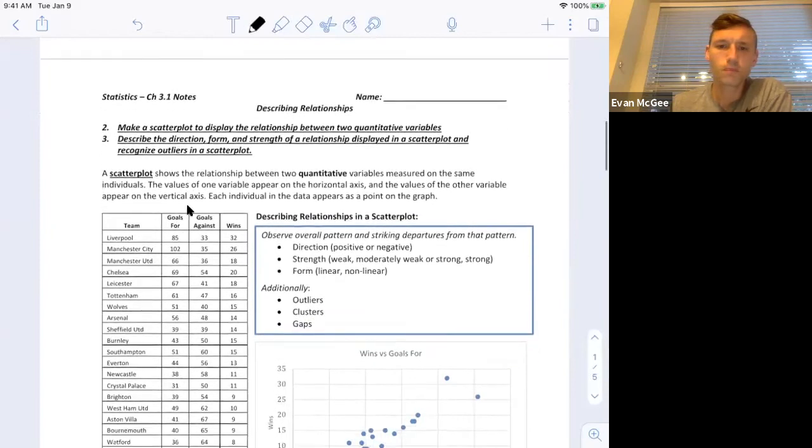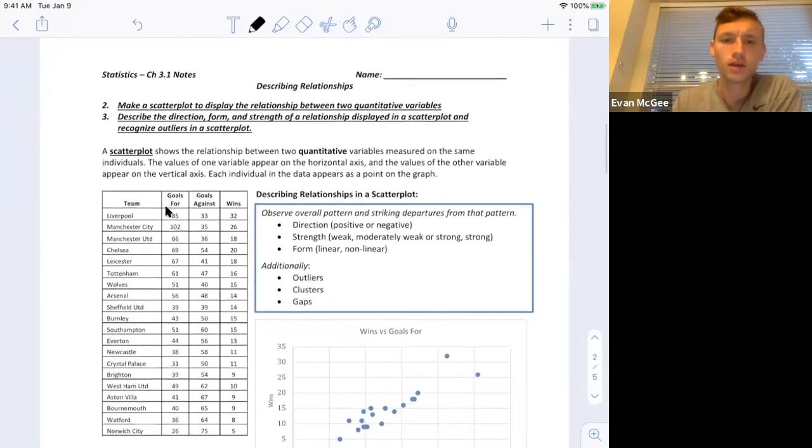So here I have the table for the Premier League from the 2019-2020 season. So I have the team, the number of goals that they scored, so goals for, number of goals that were scored against them, so goals against, and I have their total number of wins.